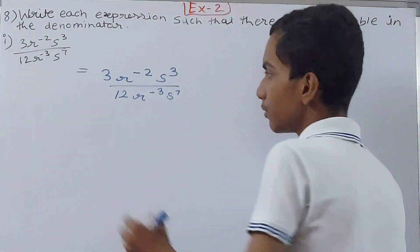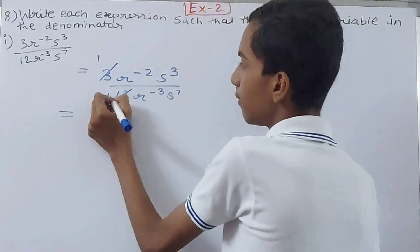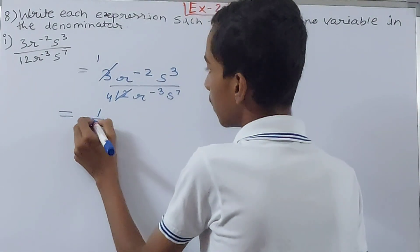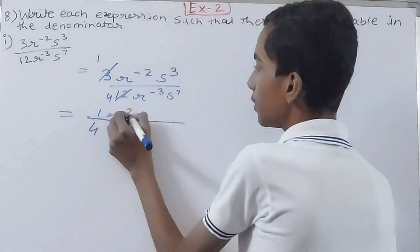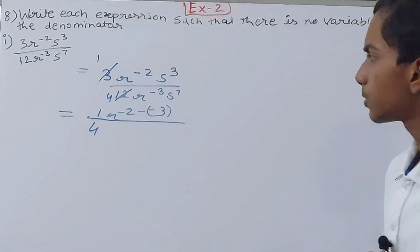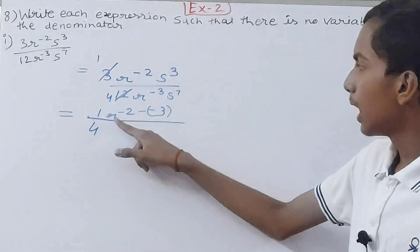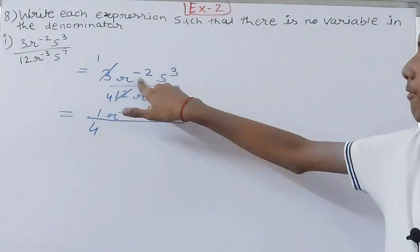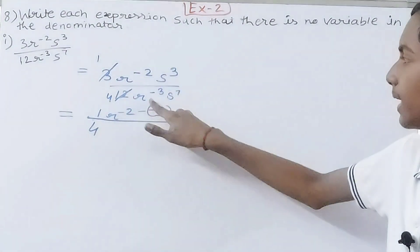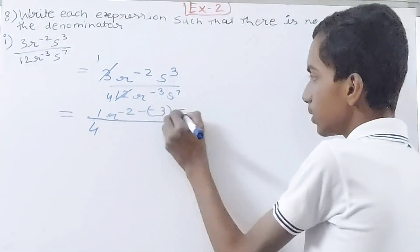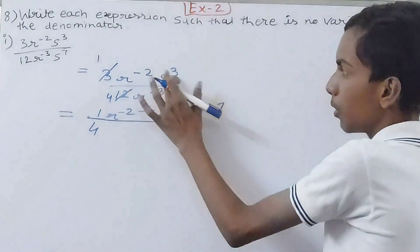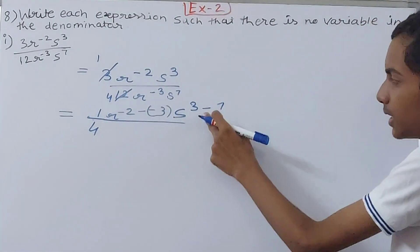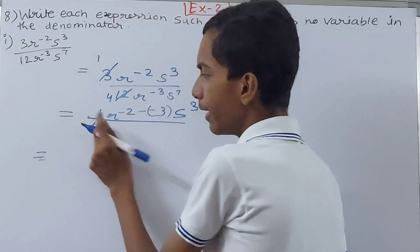First, 3 and 12 cancel to give 1 and 4. For r, we do r^(-2) minus (-3), because -2 is the numerator power and -3 is the denominator power, so we subtract them: minus 2 minus minus 3. For s, we do 3 minus 7, since 3 was in the numerator and 7 was in the denominator.